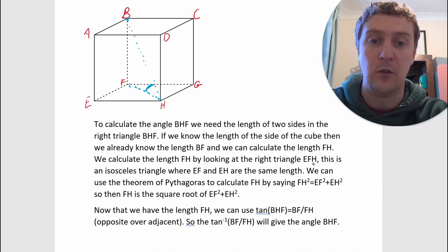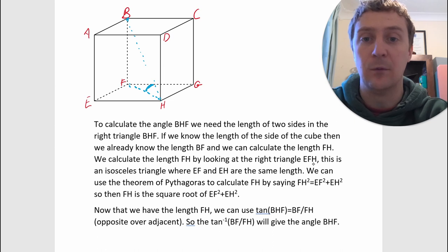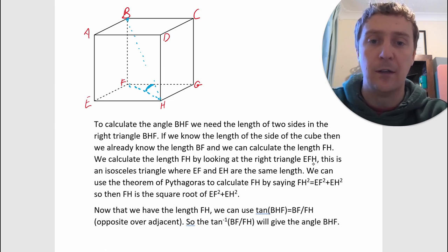We calculate the length FH by looking at the right triangle EFH. That's this one down here, EFH. This is an isosceles triangle where EF and EH are the same length.